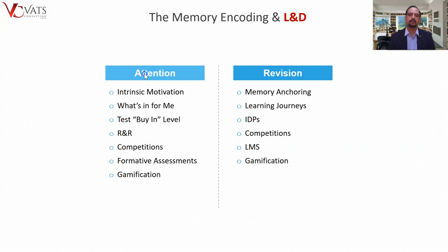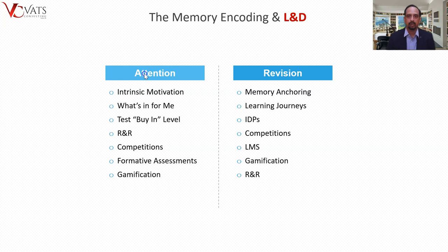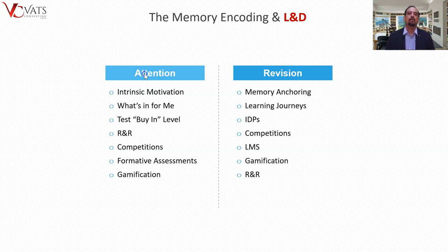For R&R: an important insight is that before the impact of the previous recognition or reward fades, we need to give the next one - as per the Ebbinghaus forgetting curve. The interval between R&R reinforcements has to be very strategically chosen. Giving two repetitions too soon or too late will both fail to serve the purpose. The duration interval between different R&R shots is a very important strategic decision.